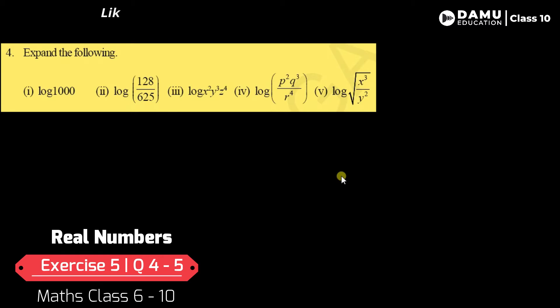Expand the following in logarithms. The first one is log 1000. So for log 1000, we need to take 1000 through prime factorization.